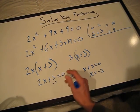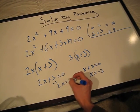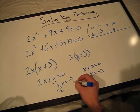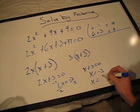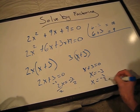We'll subtract the 3, and we'll come up with 2x equals negative 3, and then divide by 2. And we come up with x equals negative 3 over 2.